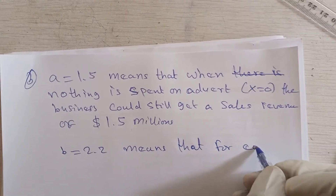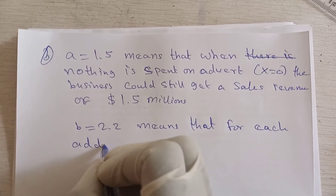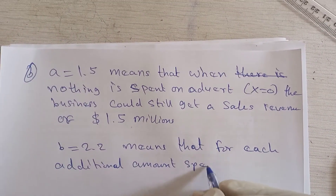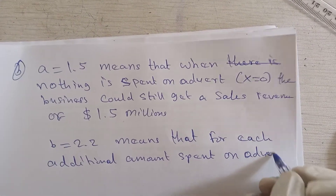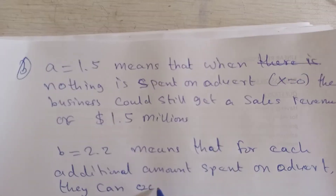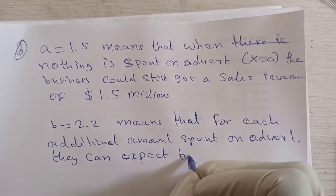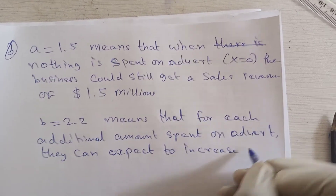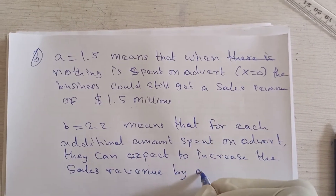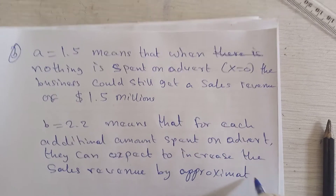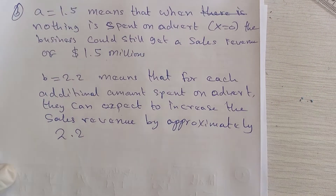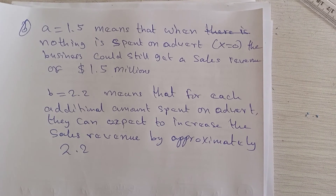To interpret b: b = 2.2 is the gradient. It means that for each additional unit amount spent on advertisement, the business can expect to increase sales revenue by approximately 2.2 million dollars.